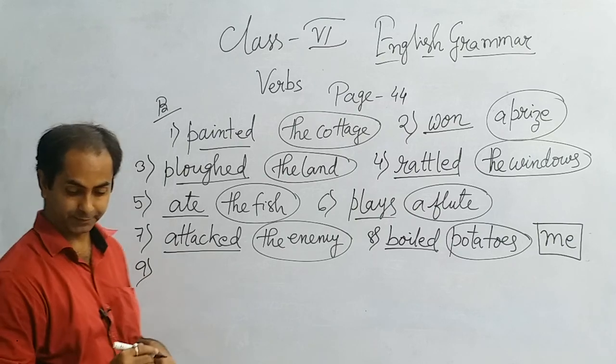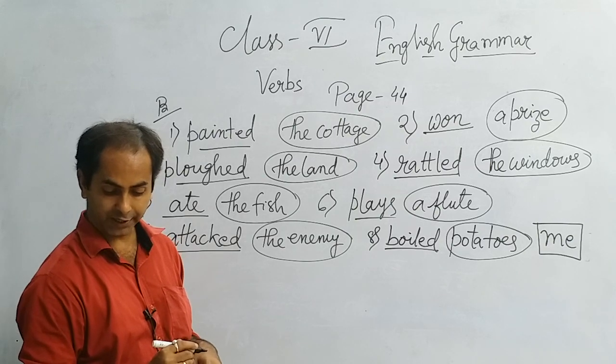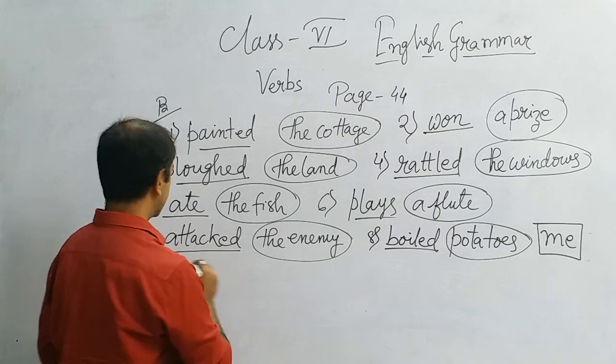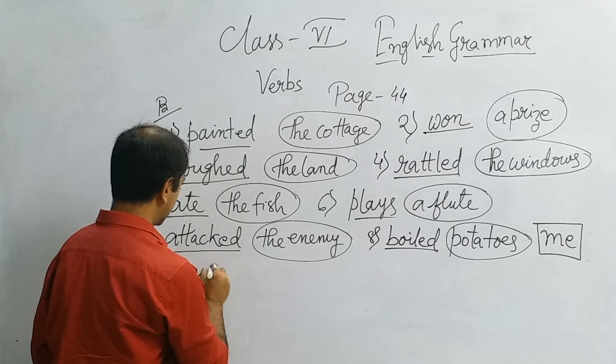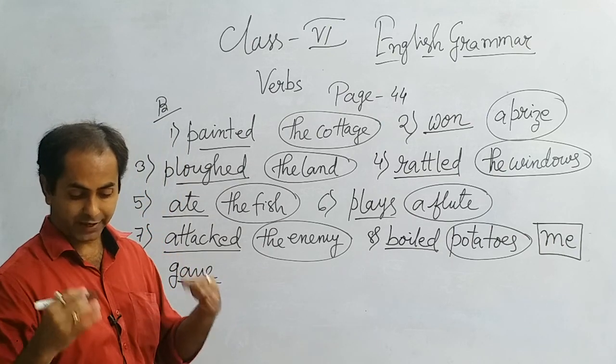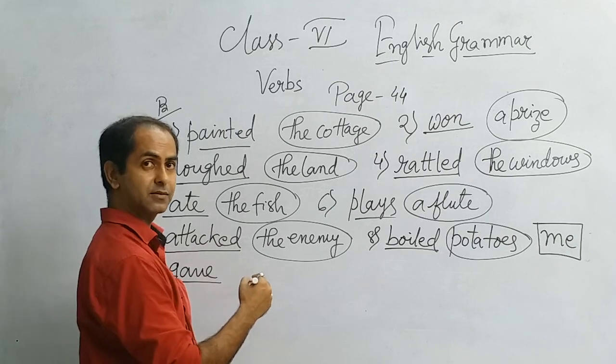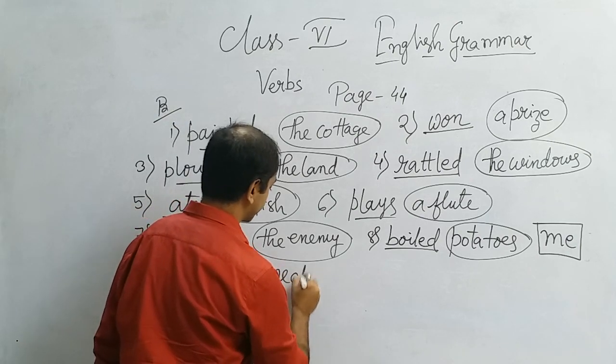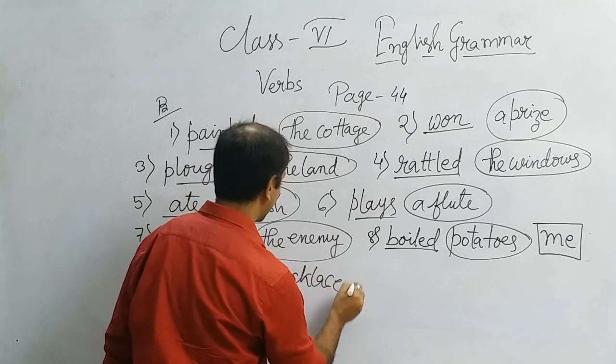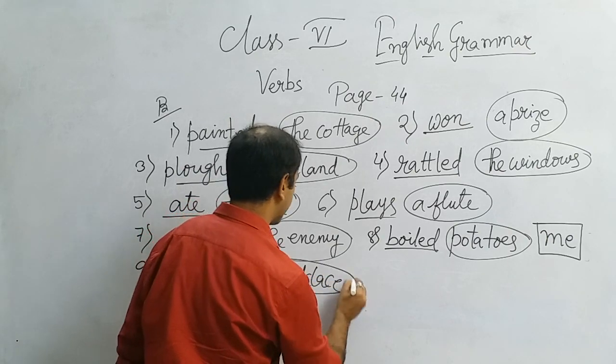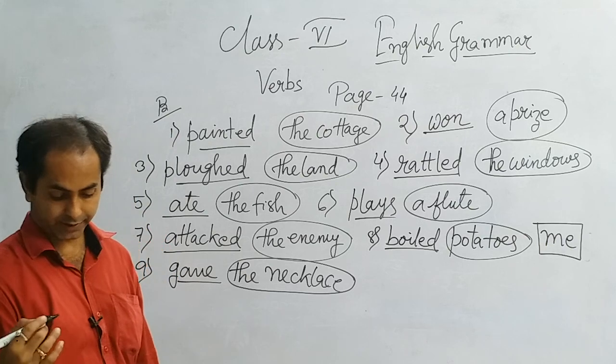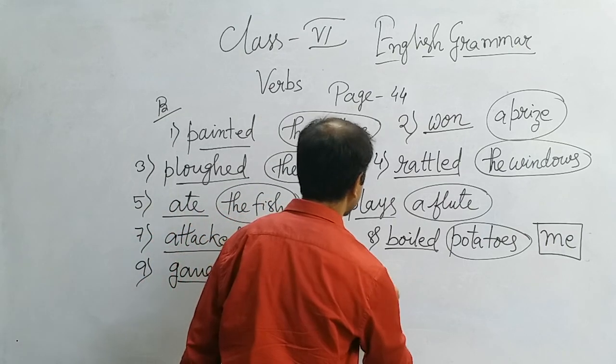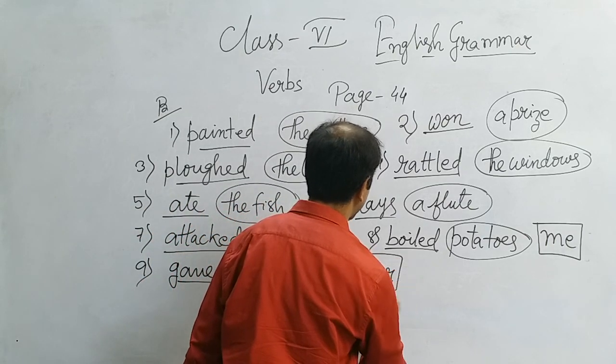Number 9: The jeweller gave the necklace to her. Gave is the verb. Gave what, the necklace. The necklace is the direct object. Necklace to her, her is the indirect object.